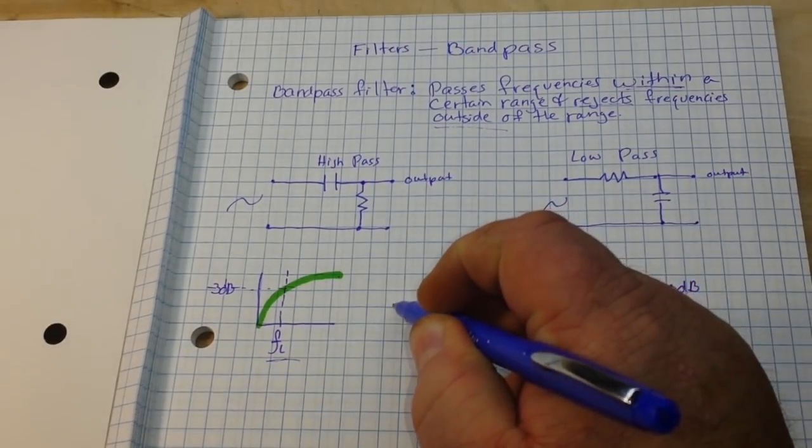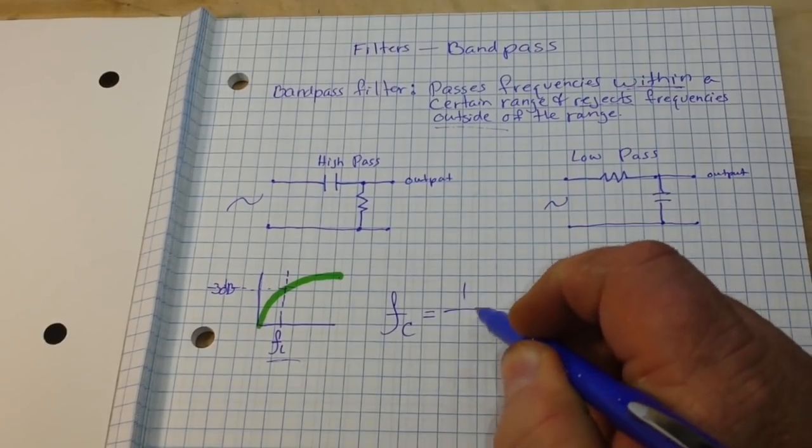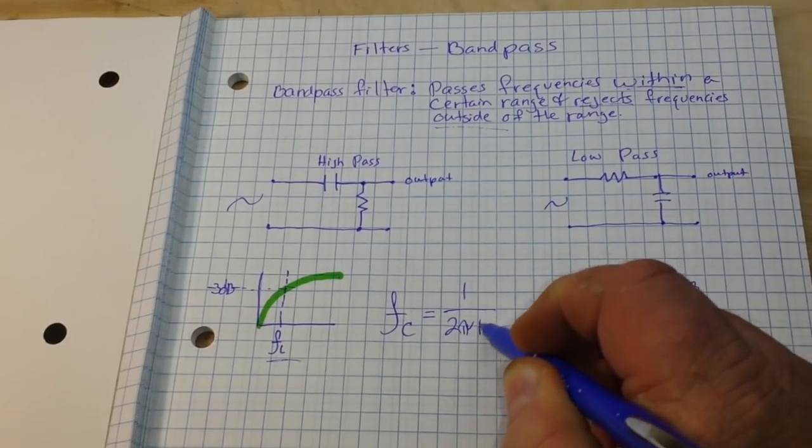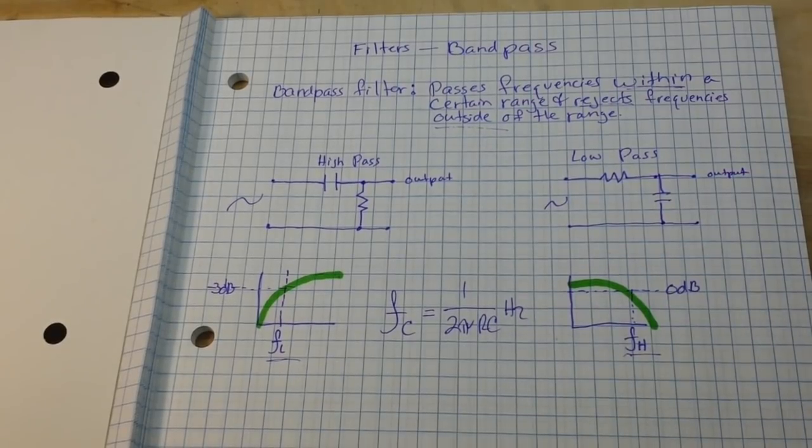And to find that, our frequency cutoff equals 1 over 2πRC. And it works the same for the bandpass filter.